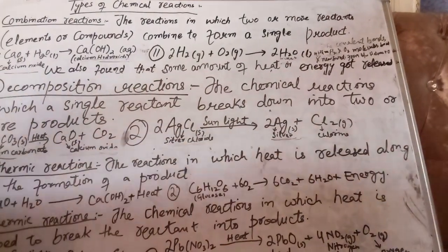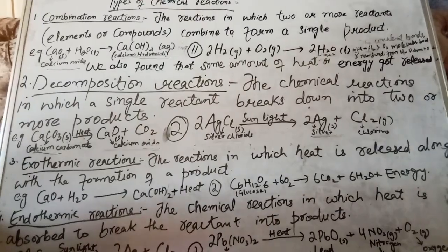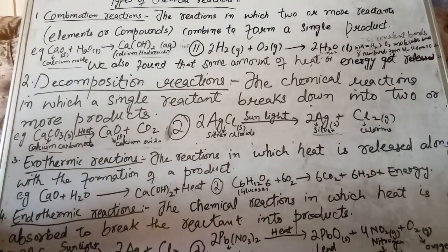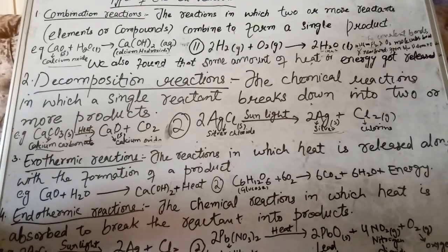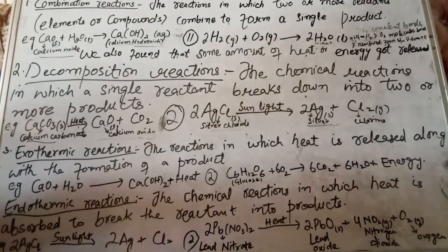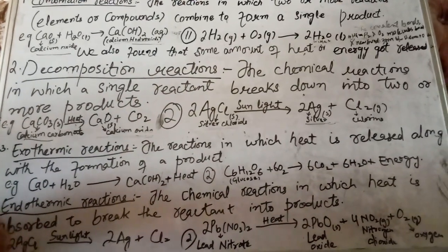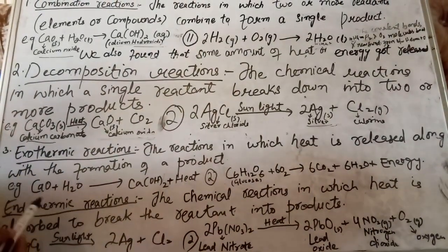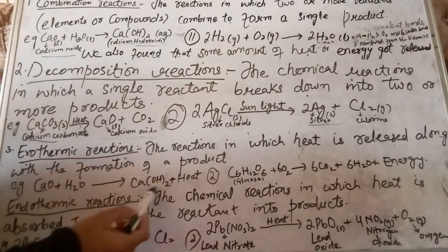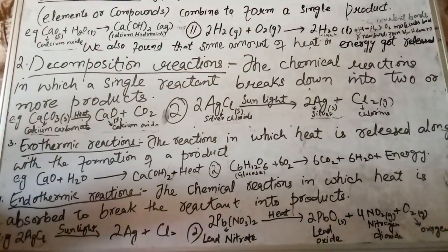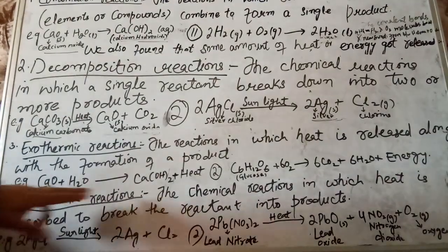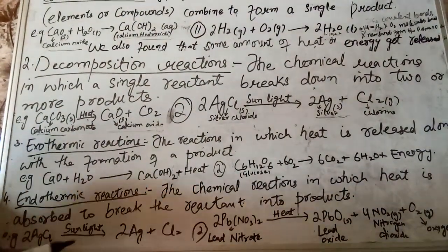The third type is exothermic reactions. In exothermic reactions, heat is released along with the formation of a product — heat is evolved. For example, when calcium oxide reacts with water, it gives calcium hydroxide and also a large amount of heat gets released, due to which the beaker in which the reaction is carried out gets hot.